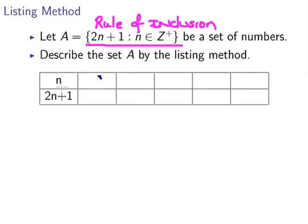So it's going to be 1, 2, 3, 4, and so on. And what we have to do is compute 2n plus 1. So we have 3, 2 times 1 plus 1, 2 times 2 plus 1 is 5, 7, 9,